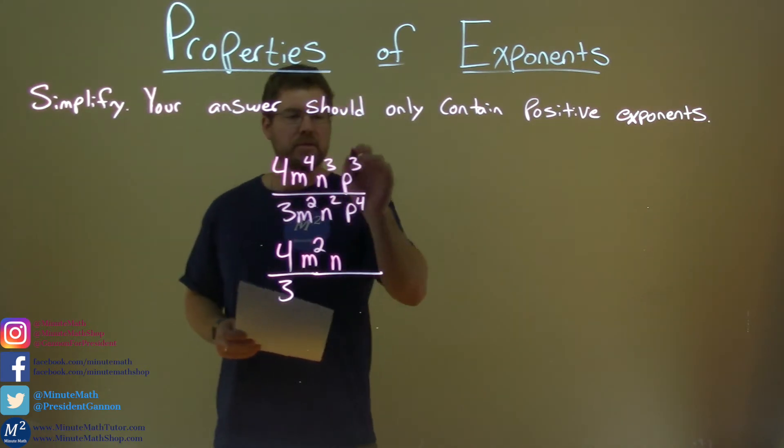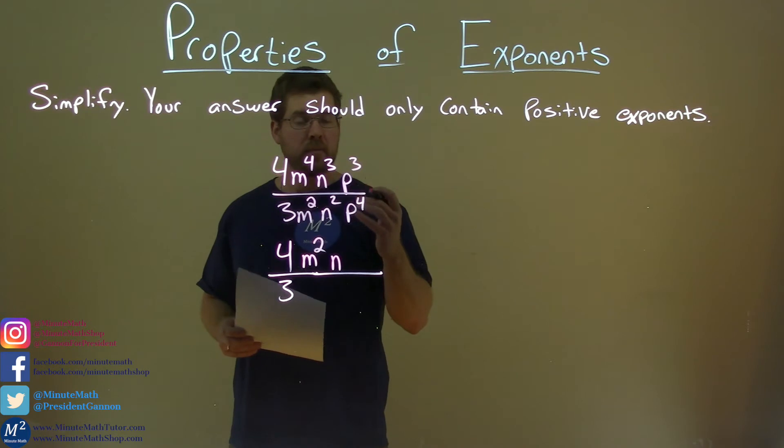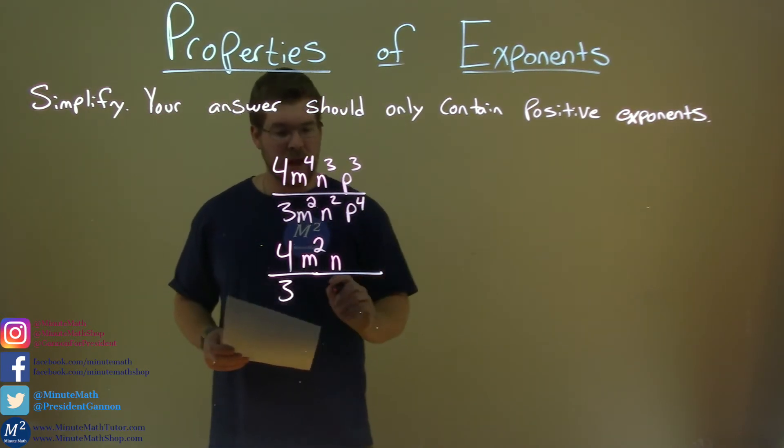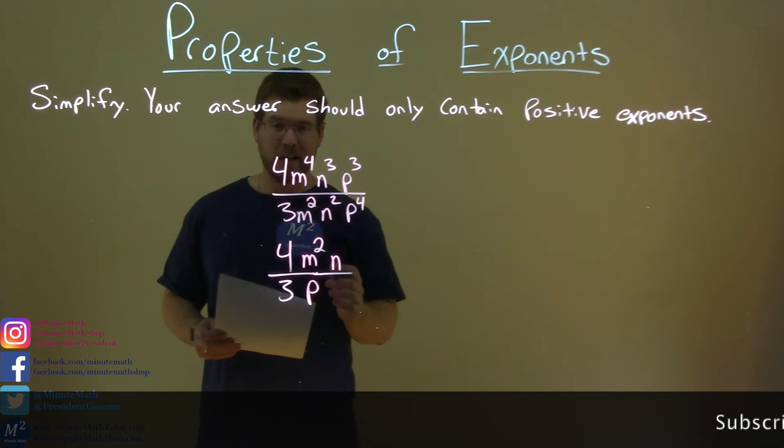Last one's tricky. p to the 3rd power over p to the 4th power. Subtract the exponents, 3 minus 4 is a negative 1, meaning it's a positive in the denominator. p to the positive 1 power, don't need to write that there. And there we have our answer all done.